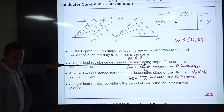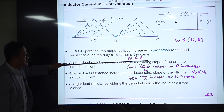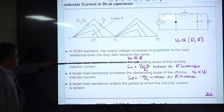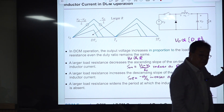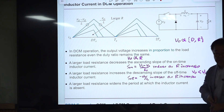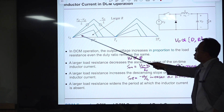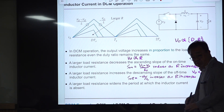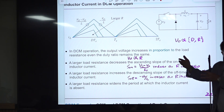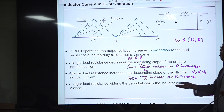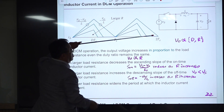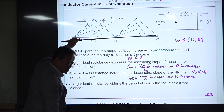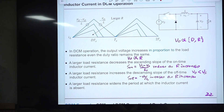Output voltage in DCM is proportional to R. If R increases, the output will increase, but the load current decays faster than the rate of increase. Even though output voltage is increased, the load current is further decreased. So the average value of inductor current — which equals load current — is reduced, shrinking the triangle area.